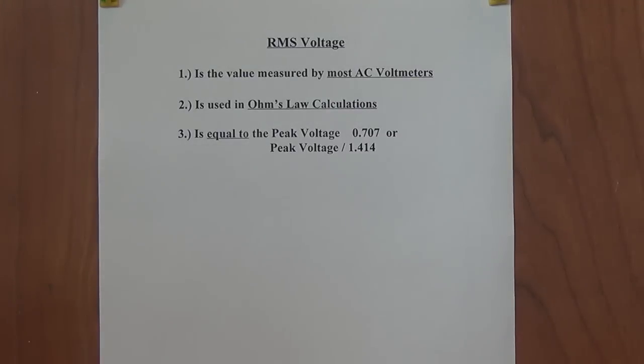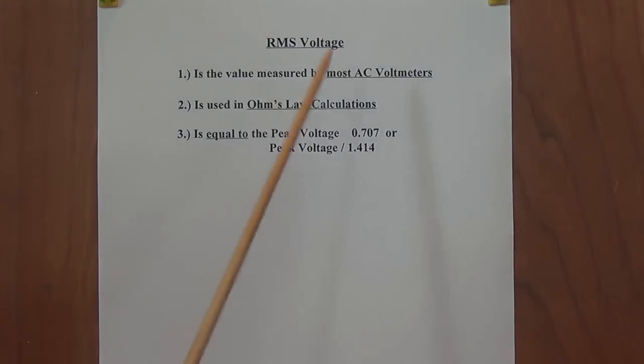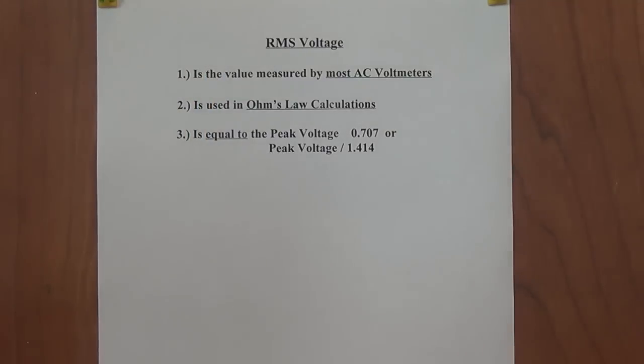Here are some more facts about RMS voltage. It is the value measured by most AC voltmeters. If you clip your voltmeter onto a wall socket somewhere, it's going to read 121 volts. It's not going to read that peak that I've been telling you, the 169.7, because they're calibrated to give you the RMS value. Secondly, when we do Ohm's law calculations, which are by far the most commonly used formulas in electronics, you use RMS voltage values when you're talking about alternating current. You do not use the peak voltage values.